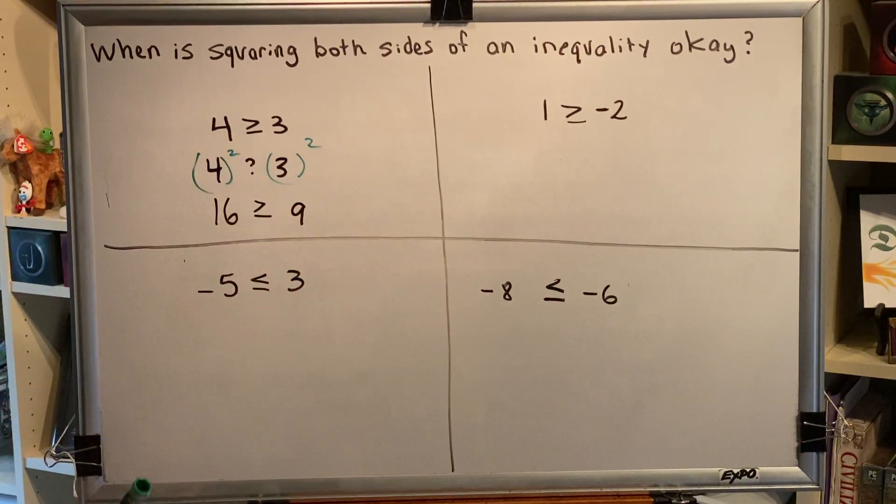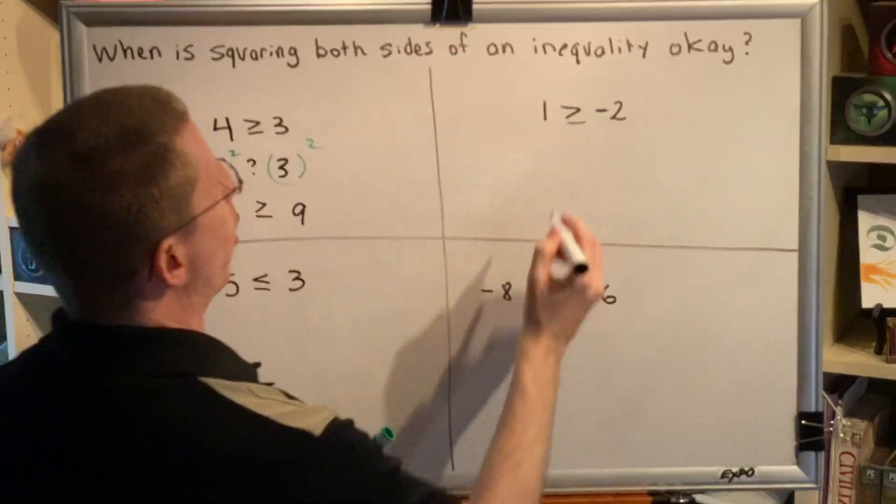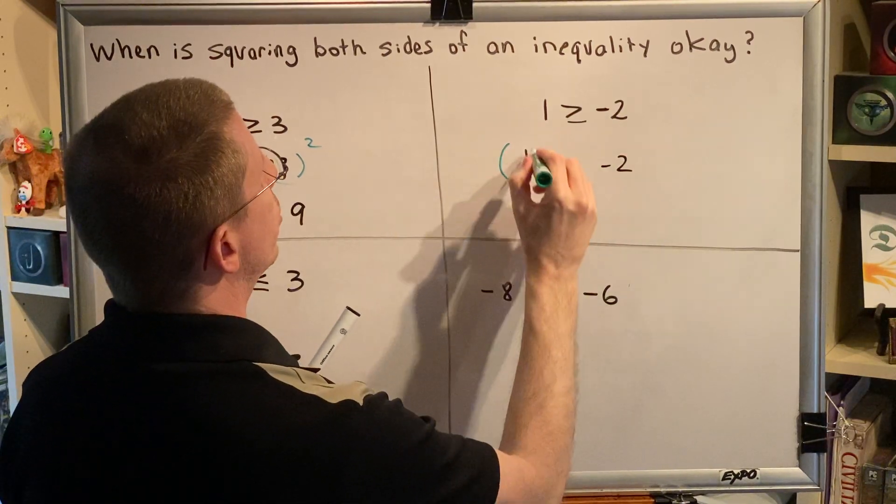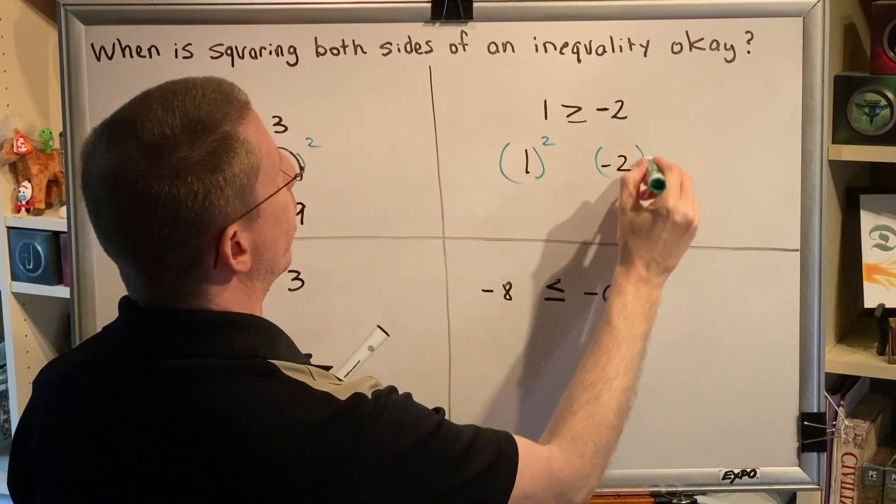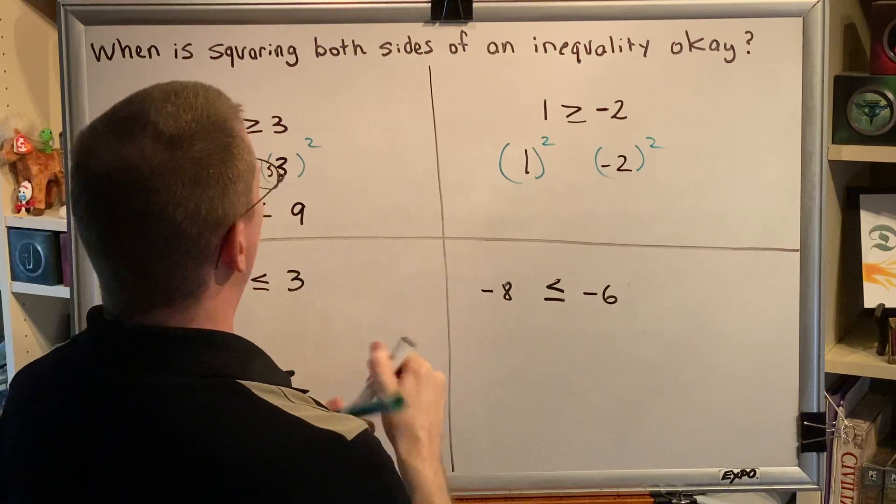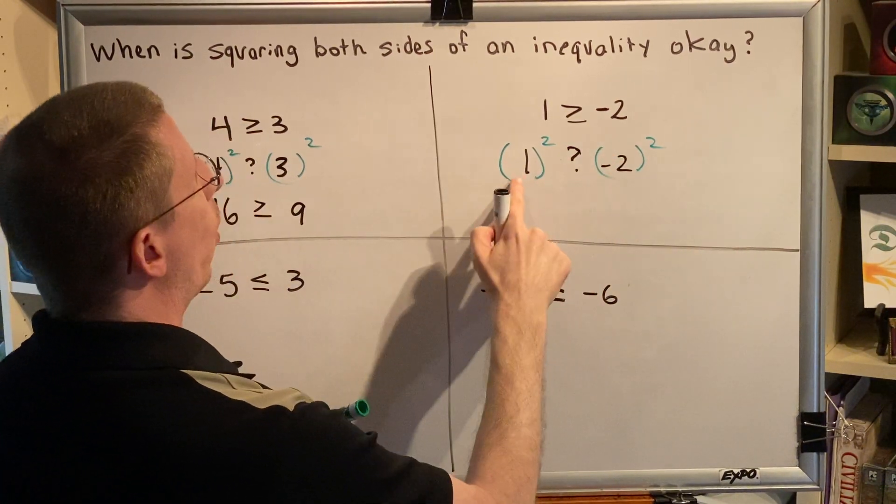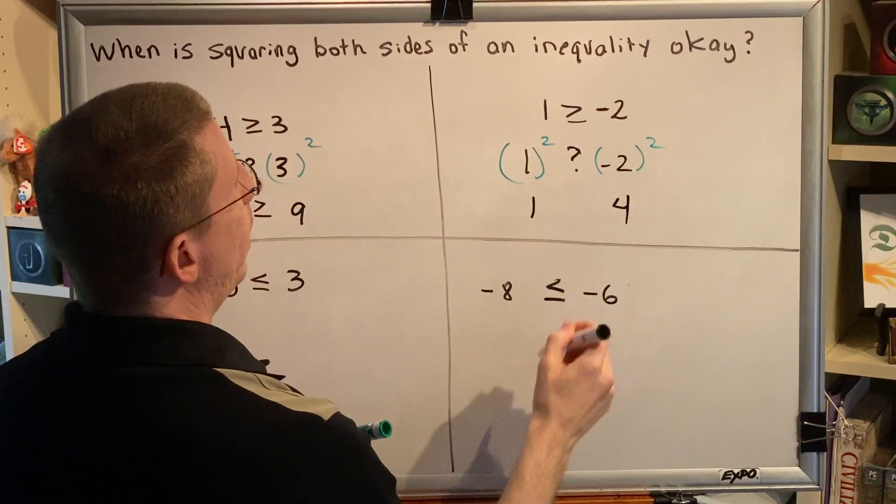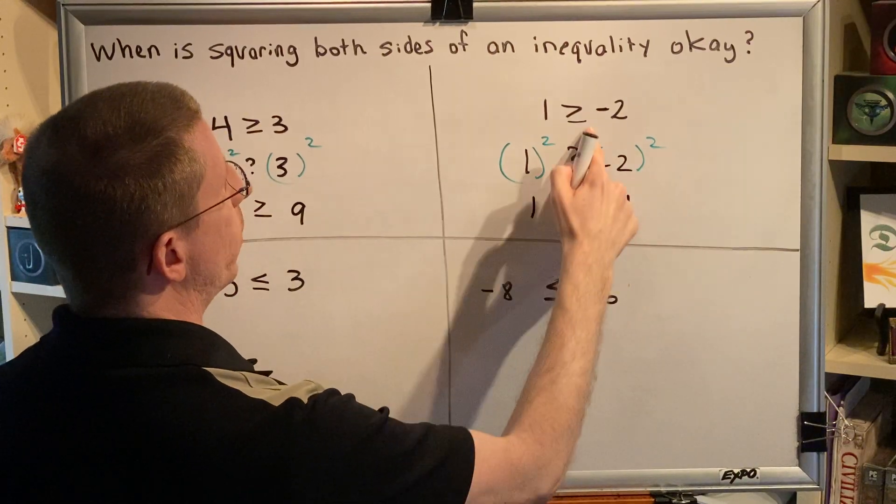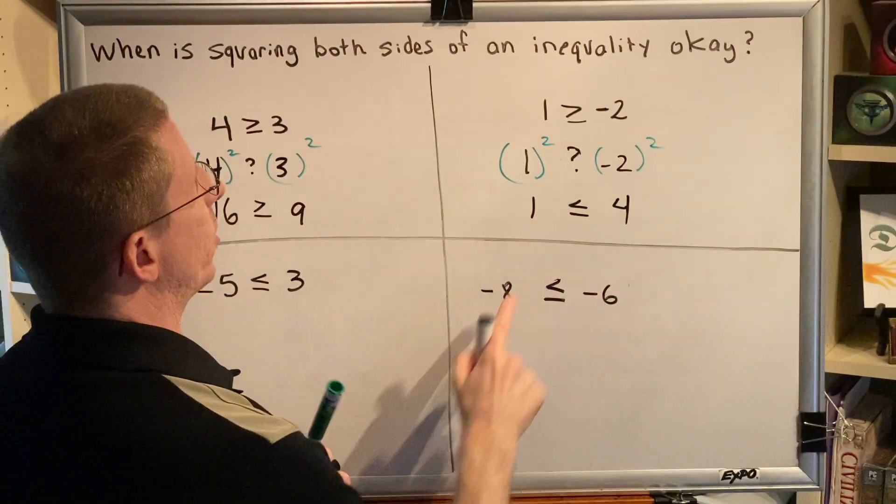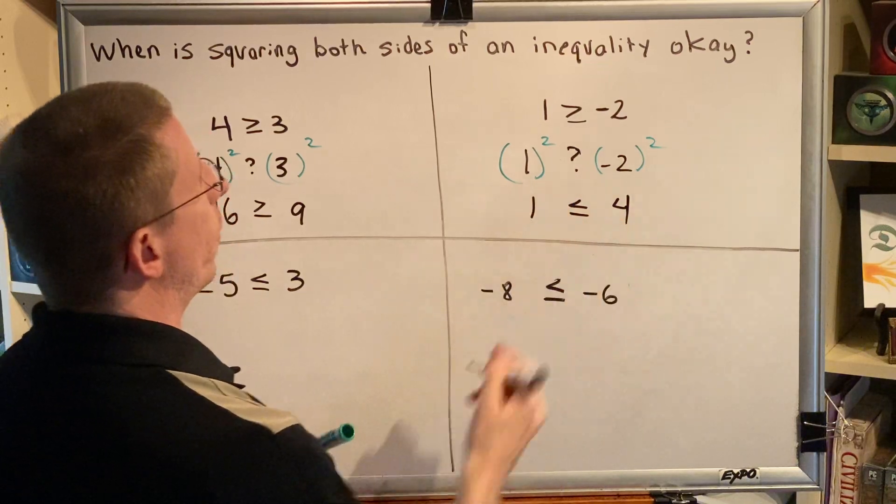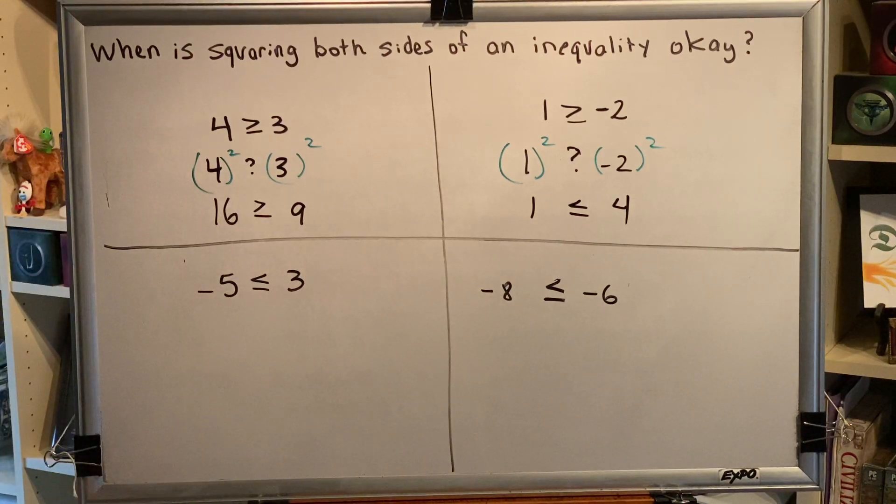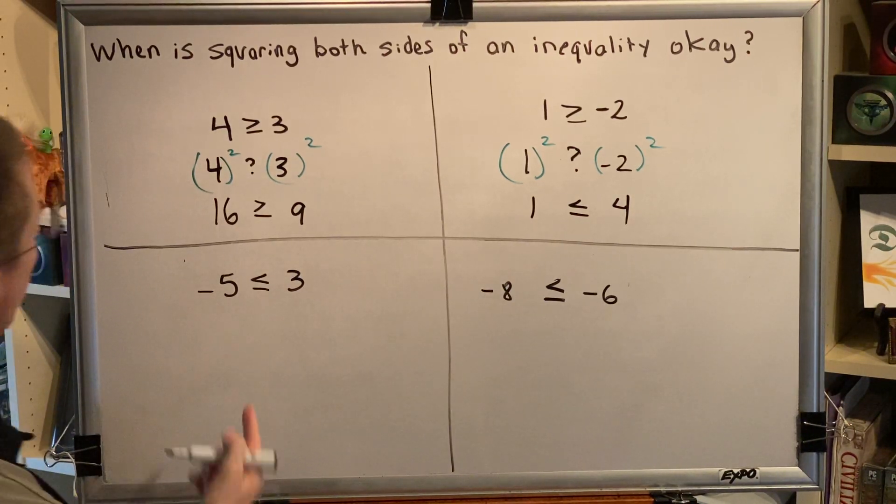Let's look over here. Same approach: one and negative two, we're going to square both sides. So we'll square the one and we'll square the negative two and then we'll see if we can figure out what sort of sign should go in between. Well, one squared is one and negative two squared is positive four, and so in this particular instance we find that we would have to swap the sign so that we have a true statement because one is less than or equal to four. So we now have two bits of information and they are seemingly contradictory.